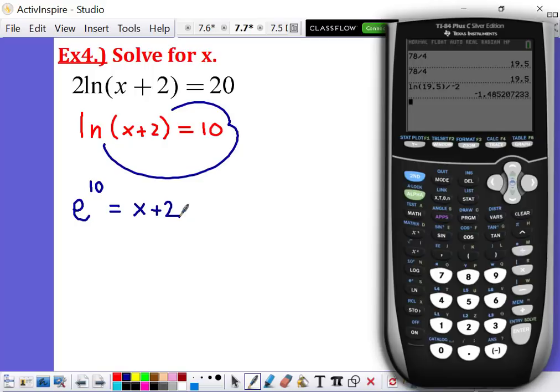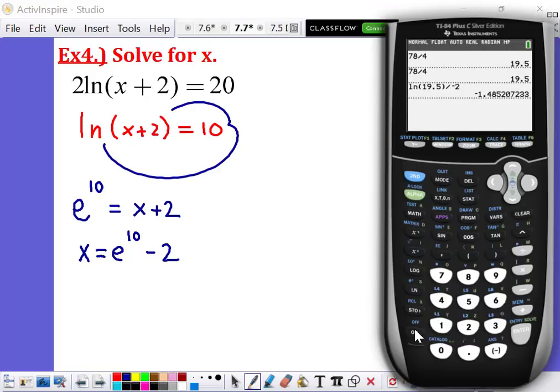Now, remember that E is a constant. It's an actual number that means the same thing every single time you use it. So if you take a number and raise it to the 10th power, E to the 10th is actually going to equal a real number. So if you wanted to solve for X, you're going to take whatever E to the 10th is, and you're going to subtract 2 to that. So then we're going to go back to our calculator, and you can actually do E to certain powers. If you look right above the natural log button on your calculator, there's an E to the X.